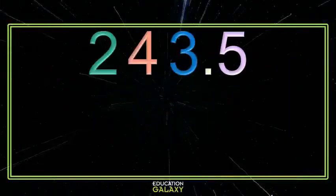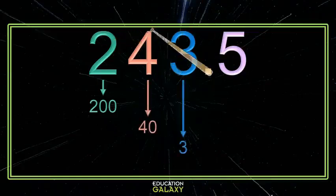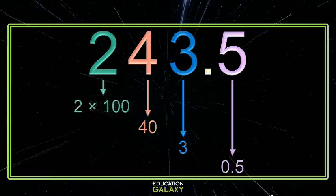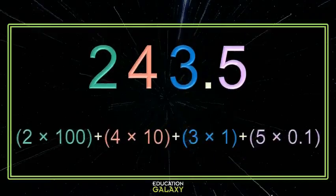It doesn't change anything. We're going to start the same way — break our number into its place values. We know that the 2 represents 200, the 4 represents 40, and so on, and the 5 is in the tenths place, so that's 5 tenths. Then we look at these as a product of place values: the 200 is 2 one-hundreds, the 40 is 4 tens, the 3 is 3 ones, and the 5 in the tenths place is 5 tenths. Now we just write that as a sum — ta-da! You have your number in expanded notation.